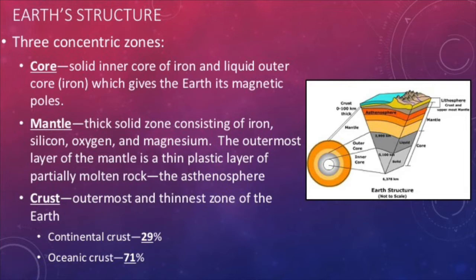The upper portion of the mantle is the asthenosphere. The asthenosphere is closer to a solid form than the rest of the mantle, but is still considered a liquid. Last, we have the crust. This is the outer layer of earth on which we live. It is the thinnest layer and is broken up into two major types: 29% is continental, aka found underneath the land, and 71% is oceanic, aka found underneath the oceans.